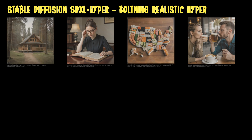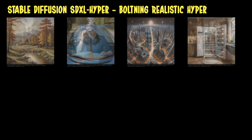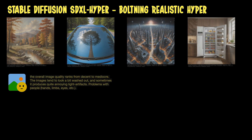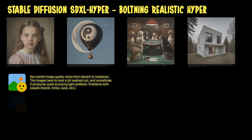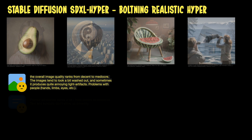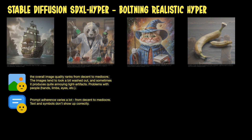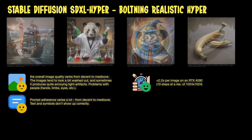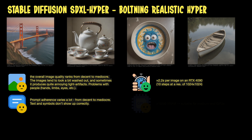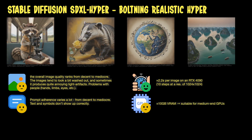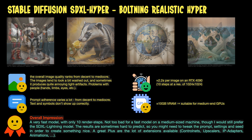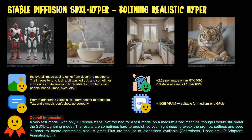Then we have SDXL Hyper with the 10-step Boltning Realistic model, which again produces mixed results in terms of quality. When you take a closer look at the images, you can sometimes see some rather annoying blue-light artifacts — not big, but still noticeable. Prompt adherence varies, and it's incapable of rendering text and symbols. It took me about 2.2 seconds for an image to render on my RTX 4090 with about 10GB of VRAM usage, so it's a very fast model, though I would rather prefer the Lightning model — but that's just my personal view.